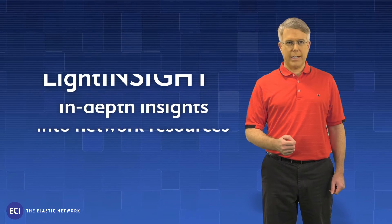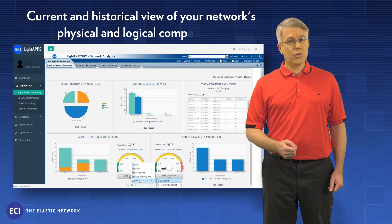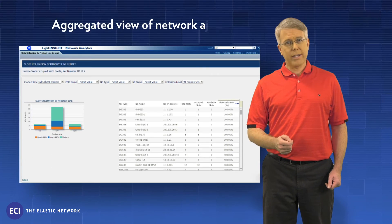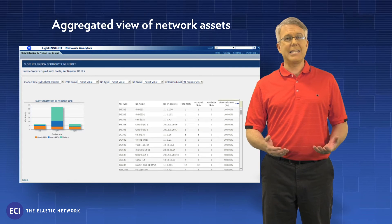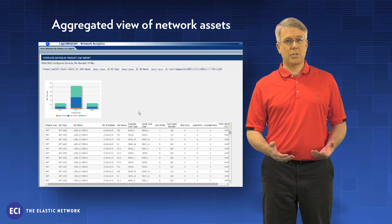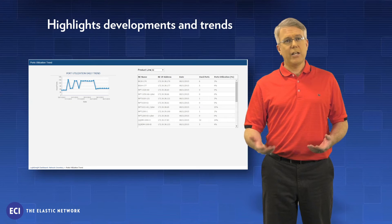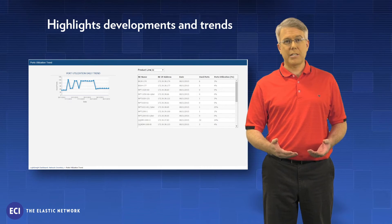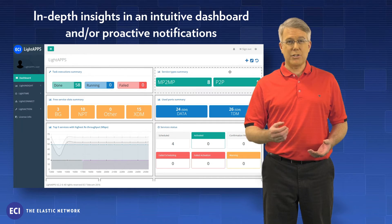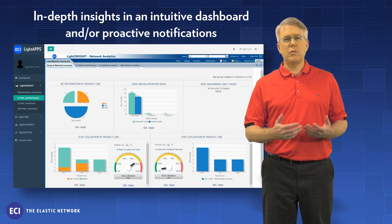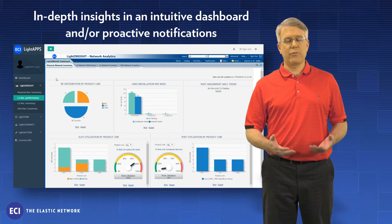Light Insight provides both a current and historical view of your network's physical and logical components, an aggregated view of network assets by collecting data from multiple management systems across technologies and network layers, highlights developments and trends such as growth, decline, and other changes to monitor capital investments and capacity planning, and in-depth insights in an intuitive dashboard and proactive notifications so that you know exactly where you stand at every turn.